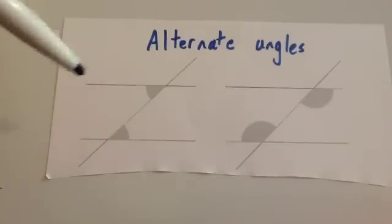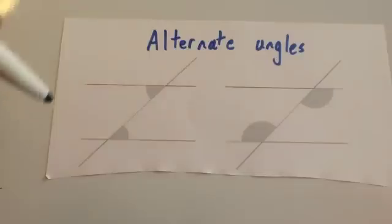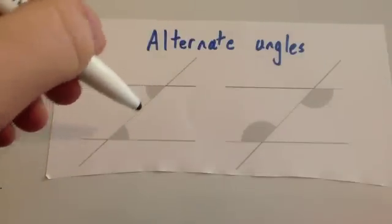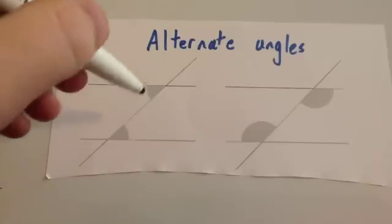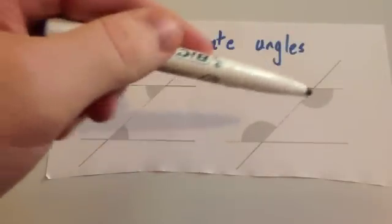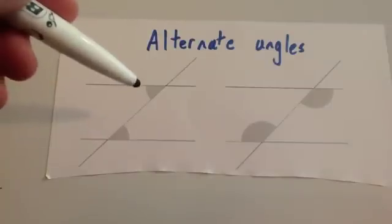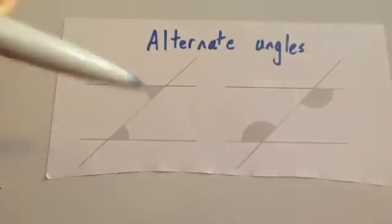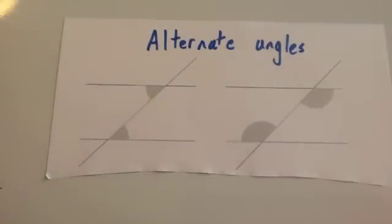Showing our alternate angles: you've got your two parallel lines and your transversal. The two angles here and here are going to be the same as each other — they're called alternate angles. Sometimes people call these Z angles because they follow a Z shape, but they're known as alternate angles. If asked what type of angles they are in an exam, definitely say alternate, not Z angle.